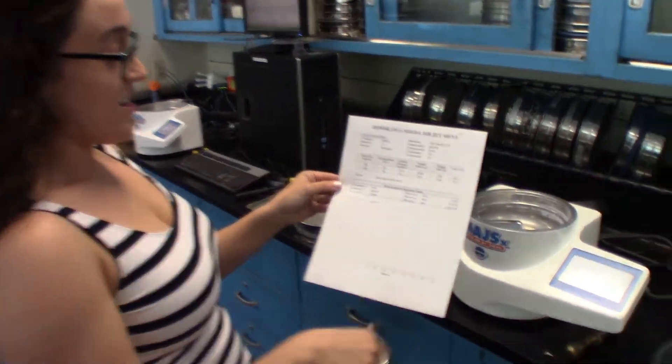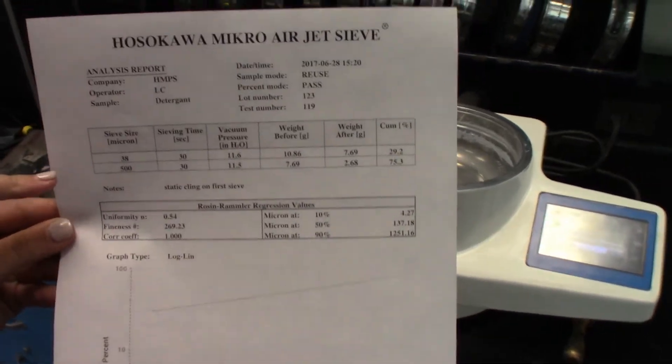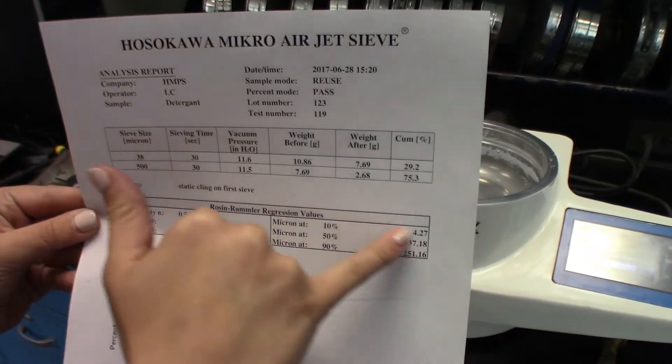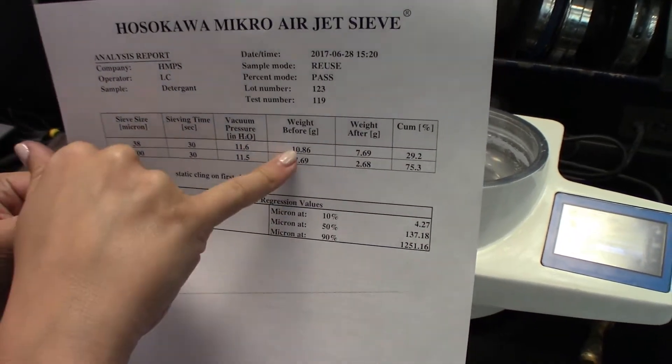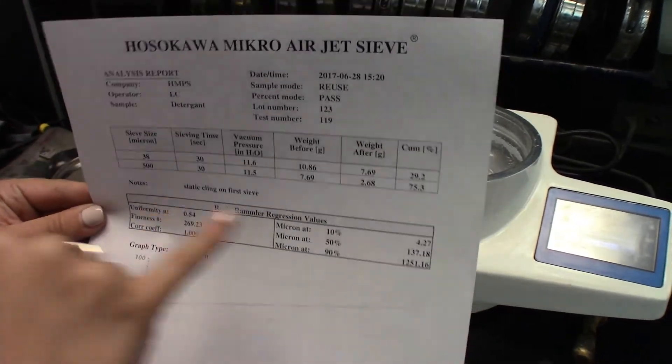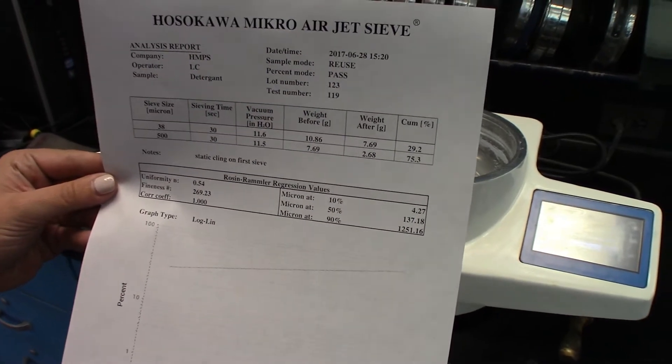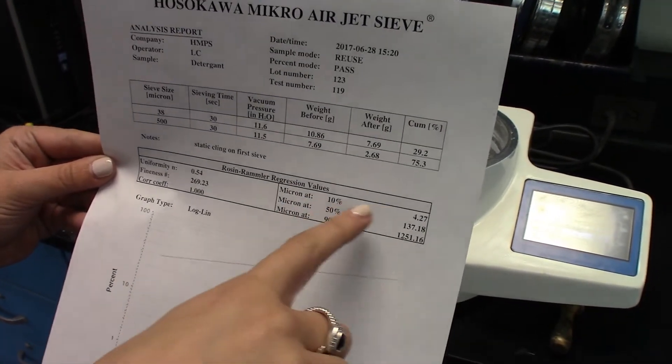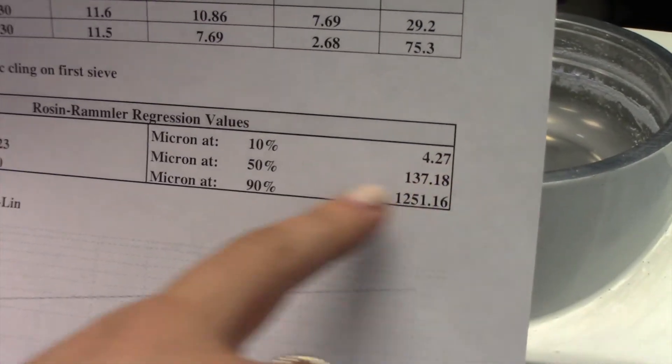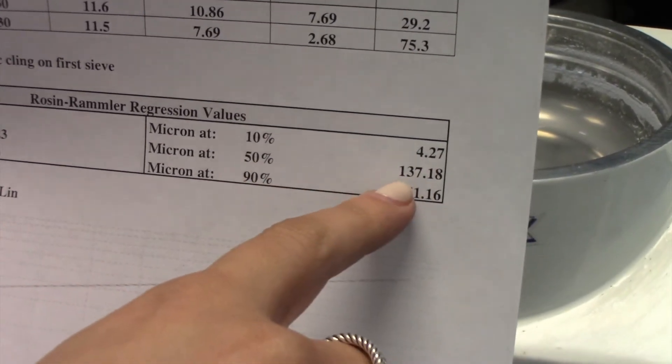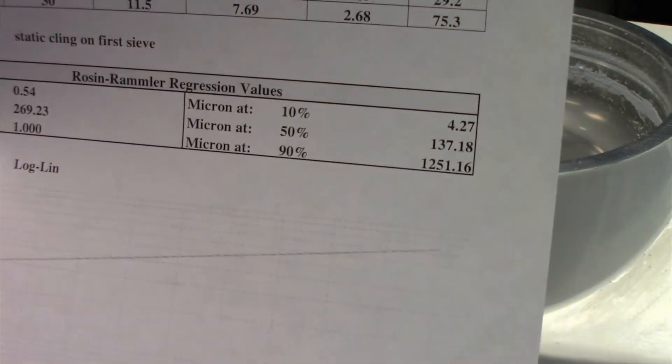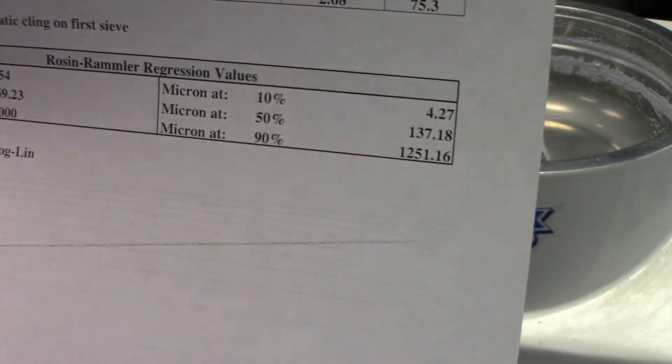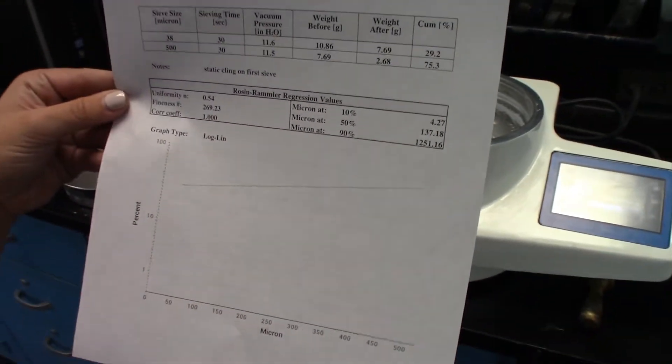As you can see here, it shows us the sieve sizes that we started with, our sieving time, the vacuum pressure, our weight before and our weight after. So out of the 10.86 grams that we started with, 2.68 grams were retained on top of the sieve screen. My D10 is 4.27 microns, my D50 is 137.18 microns, and at my D90, it's 1,251.16 microns.